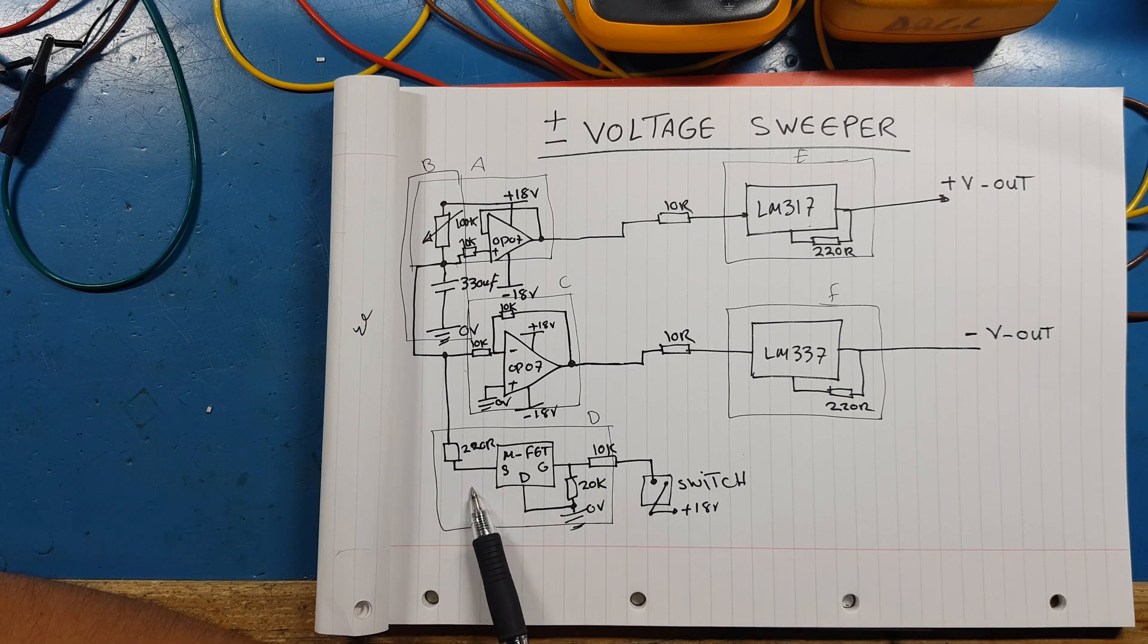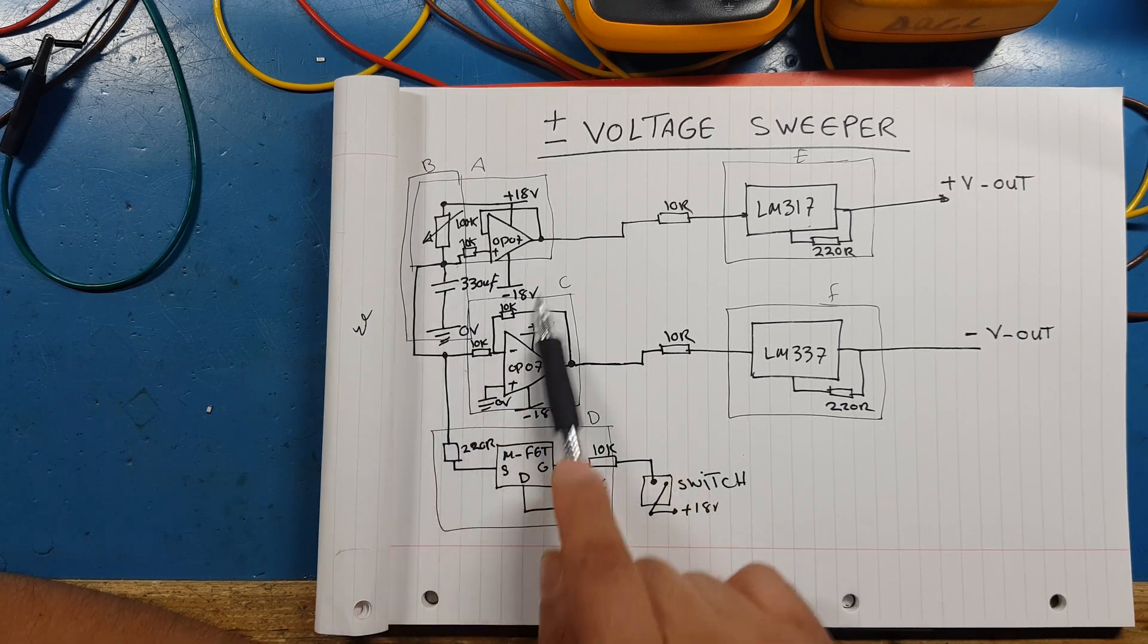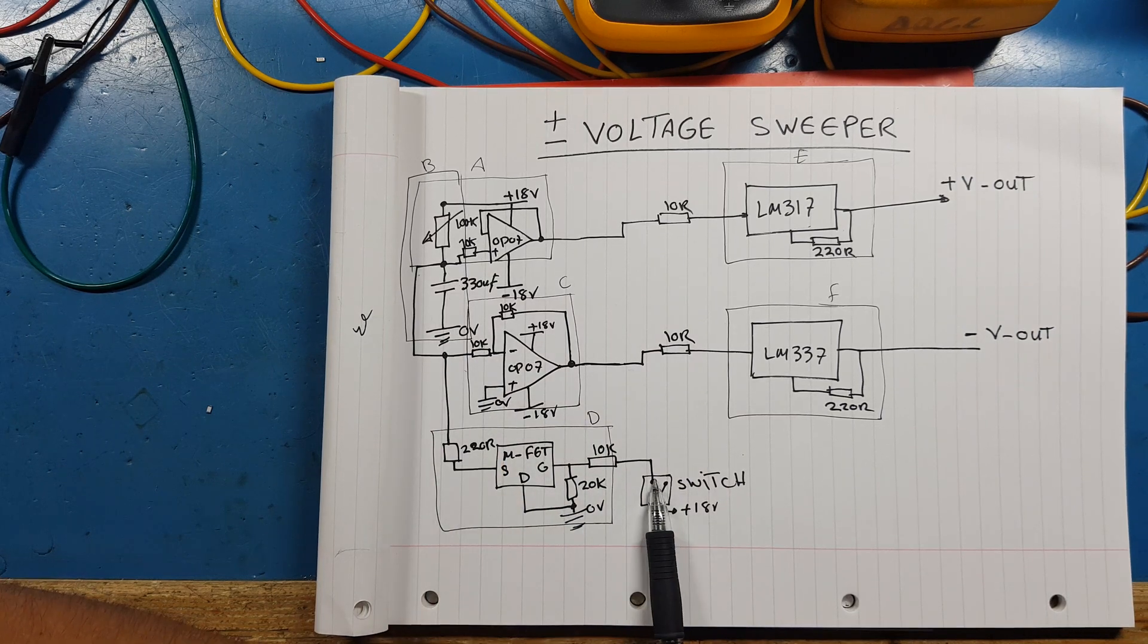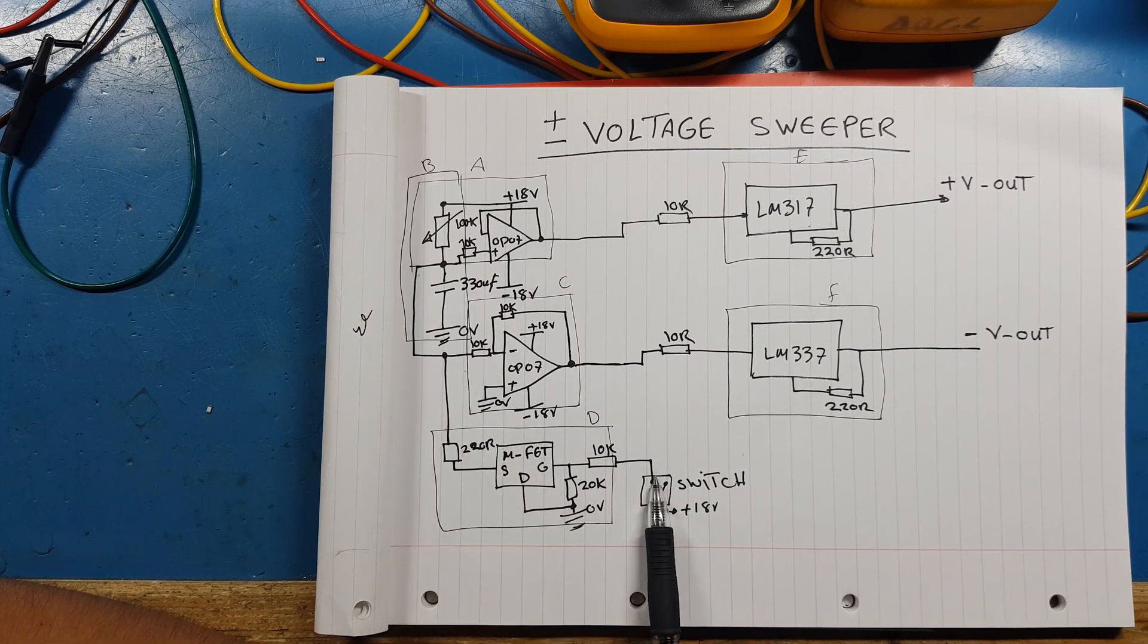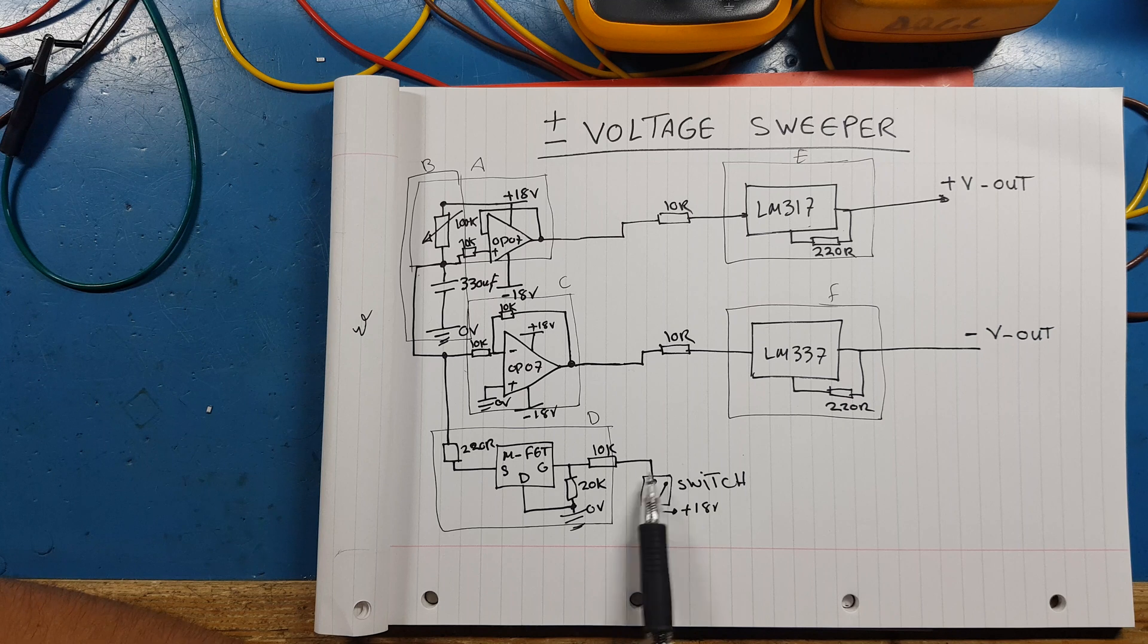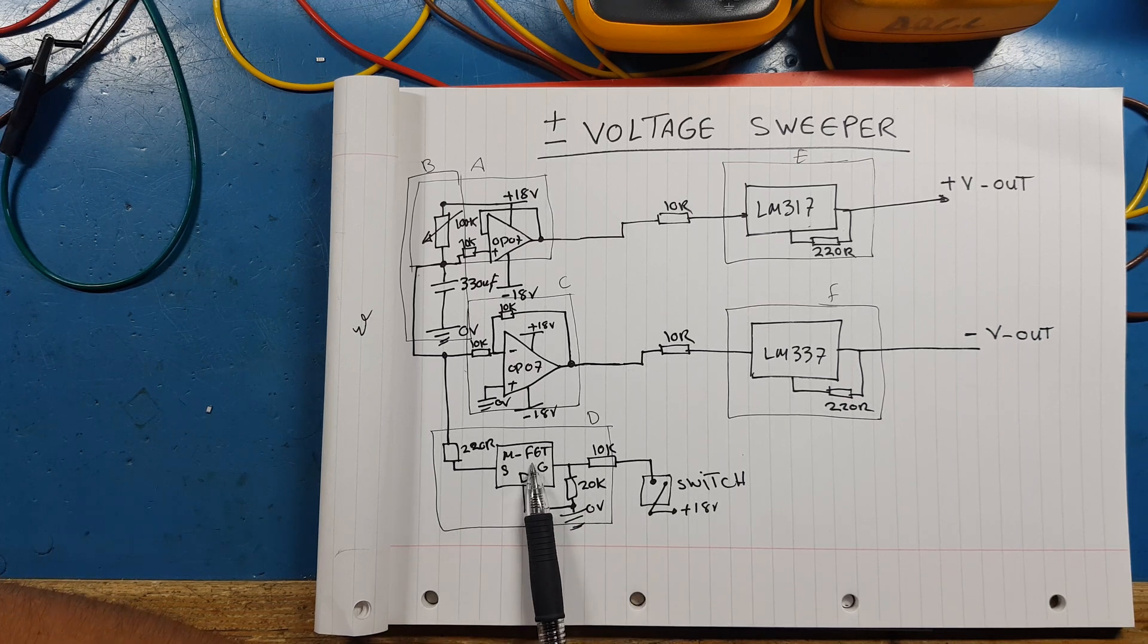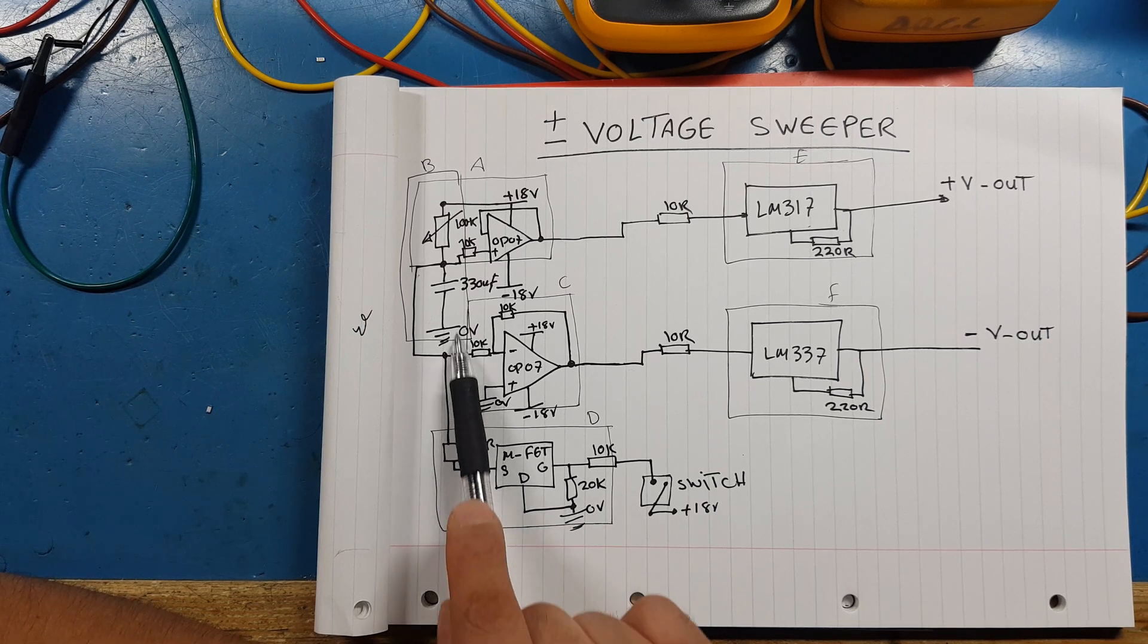And over here we've got a simple MOSFET to discharge the capacitor. So once the capacitor is charged, we can just press the switch and discharge it. We've got a tactile switch - 330 microfarad capacitor when it's fully charged, we can't just really discharge it through a tactile switch. Eventually that tactile switch is going to give out.